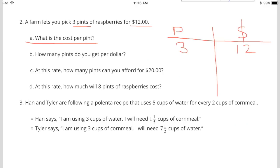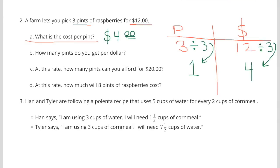Number 2. A farm lets you pick 3 pints of raspberries for $12. So I made a table. The P stands for pints, and the dollar sign stands for dollars. 3 pints for $12. A. What is the cost per pint? Divide 3 by 3, and you get 1 pint. Divide 12 by 3, and you get $4. 1 pint for $4.